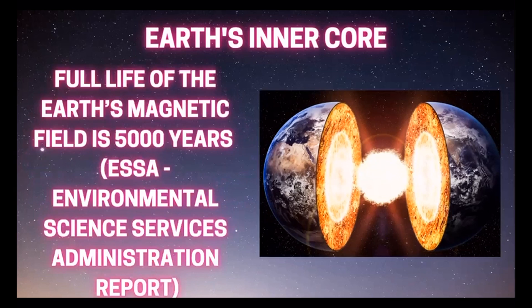According to ESA — the Environmental Science Services Administration — the full life of the Earth's magnetic field is around 5,000 years. So in 5,000 years, this core charges and discharges. This is the cycle of charge and discharge of the Earth's inner core.